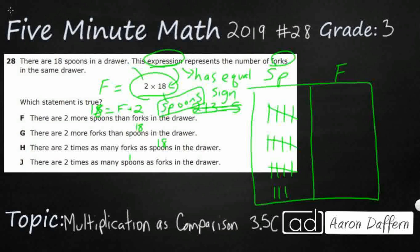How many forks do we have? Before we keep reading, let's see if we can figure out how many forks we do have. It says 2 times 18. So let's look at this as 2 times as many. So if I've got 18 forks, I need two sets of 18. So I'm going to just draw one set of 18 here.